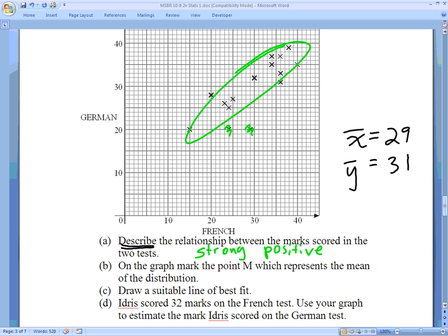On the graph, mark the point M, which represents the mean of the distribution. Well, we saw this on a previous slide. The mean mean value is a point which is the mean of the X, the mean of the Y. I wrote those values down. They were in the original instructions. I can write that right here. 29 comma 31. So I go to 29 on my X and then I go up 31, which would be right here. They asked me to label that point M, which is 29 comma 31.